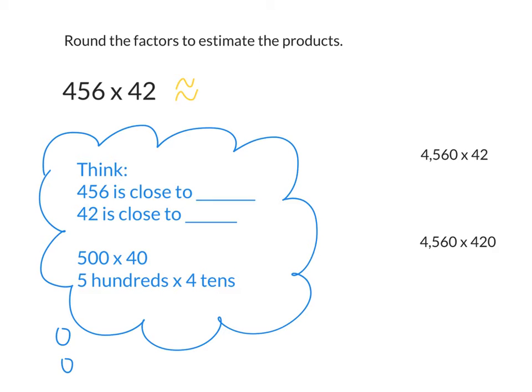The directions say to round the factors to estimate the products. Start by writing down 456 times 52. Remember that when we use these wavy equal signs, it's not drawing waves, it's the symbol that means about. It means we're estimating. We're going to be thinking things in our head, but I'll show you what you can think in your head and what you need to record. If you're thinking in your head, you don't need to write it down, but you think, 456 is close to what number? That's pretty easy to think about. Maybe 500. It rounds to 500 if I round it to the nearest 100. Do you agree? Because the 5 tens, we need to make it soar. It's 5 or more.